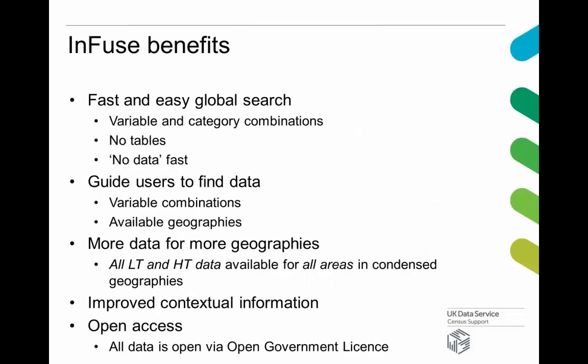To recap on what we've been saying about Infuse: the benefits are primarily that it doesn't have the concept of tables. It doesn't have the intermediate step of you having to find a table and then look into it. It provides a very fast and easy way of globally searching the entire set of census outputs because we've structured those in a single dataset. You do this using the variable and category combinations that Richard demonstrated. If you're looking for a particular combination of variables and it doesn't exist, Infuse allows you to find out very quickly that there's no data meeting your requirements — whereas previously, until you had looked in quite a number of tables, you wouldn't have been able to be reassured your data didn't exist.